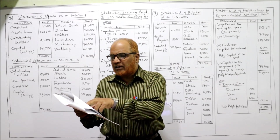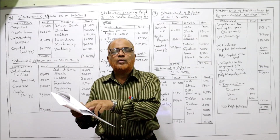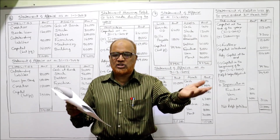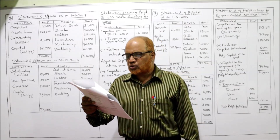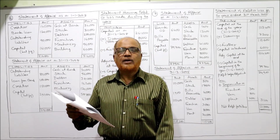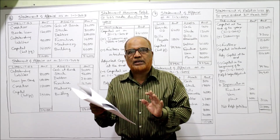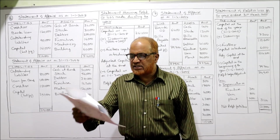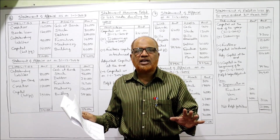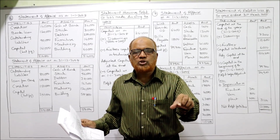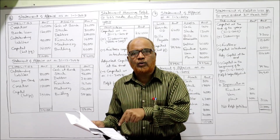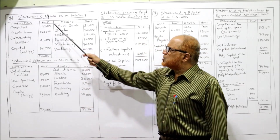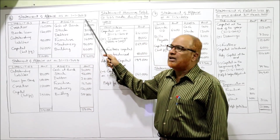New furniture costing Rs.2,500 was also purchased during the year, but again we only need opening and closing values. The task is simply to prepare a statement of profit or loss for the year ended 31st December 2008, showing how much profit was earned or loss incurred during the year 2008.